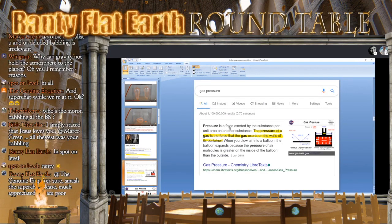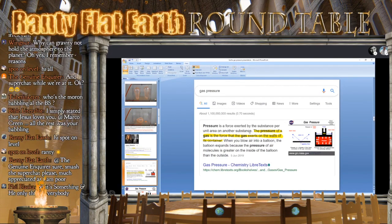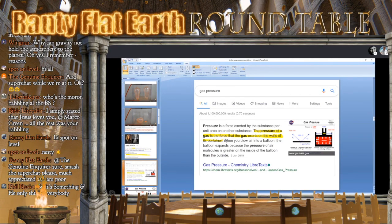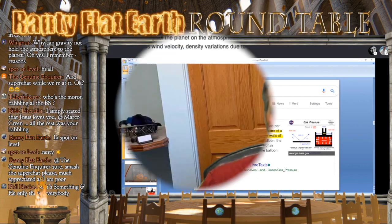If you then type in gas pressure, you'll find that you get a generic pressure definition, which is the force exerted by the substance per unit area on another substance. And then you get the pressure of a gas is the force that the gas exerts on the walls of its container. So we know that you need a container to have gas pressure. That's why Nathan's got housekeeping. We know that you have to have containment to have gas pressure.